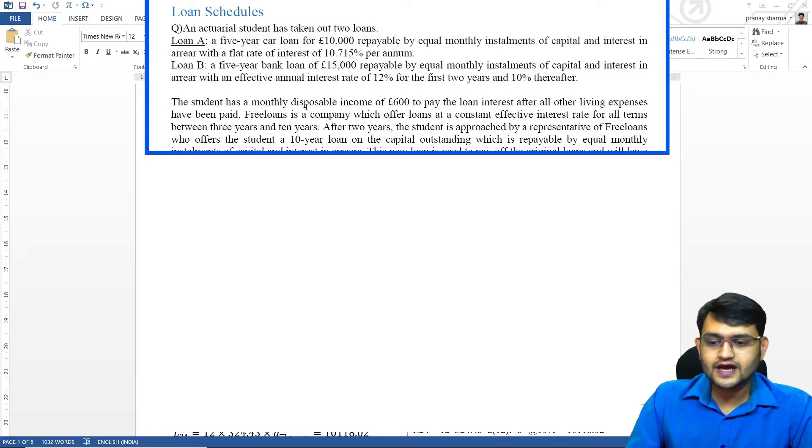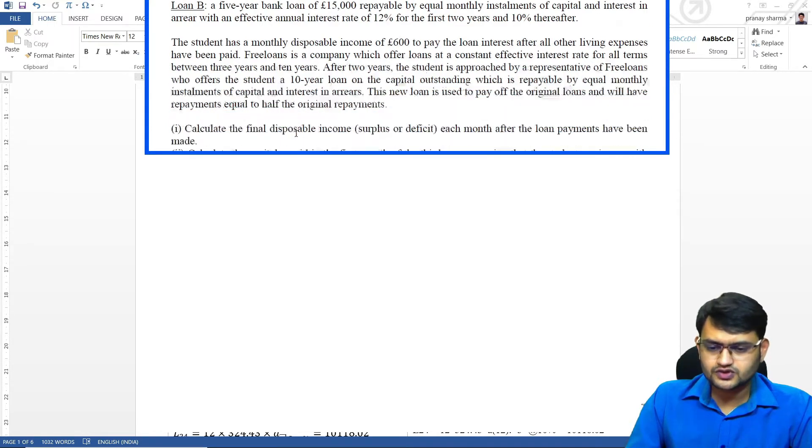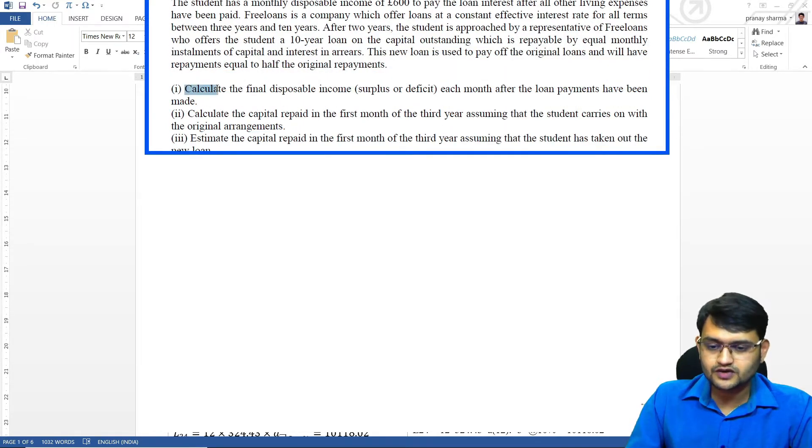The student has a monthly disposable income of 600 to pay the loan interest after all other living expenses have been paid. We'll read the later part later. So first part, we want to calculate the final disposable income surplus or deficit each month after the loan payments have been made.